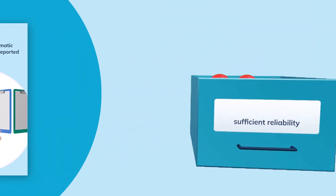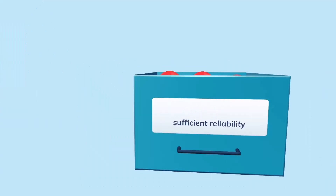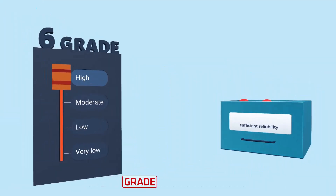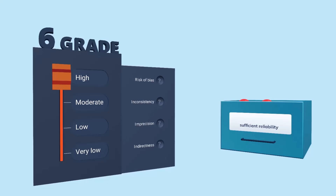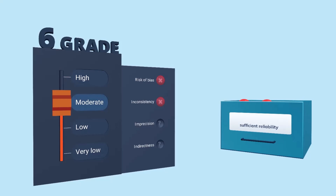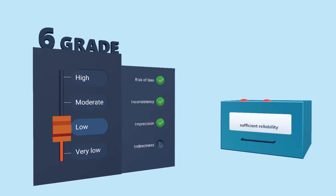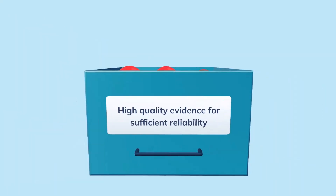In the sixth station, we decide how confident we are about that conclusion. In this last step of the process, you grade the quality of the evidence as high, moderate, low, or very low. You do this by first considering the risk of bias — if you find a risk of bias, you downgrade. If there is inconsistency, imprecision, or indirectness, you can downgrade by another level. In our case, we find no reason to downgrade and conclude that we have high-quality evidence for sufficient reliability of PROM A.